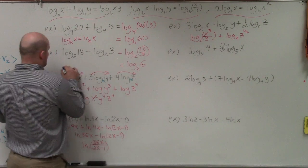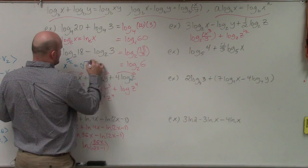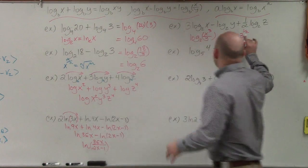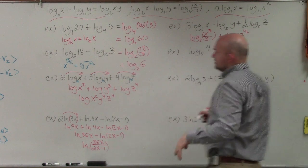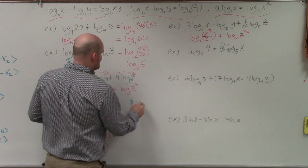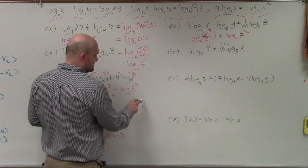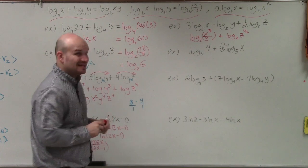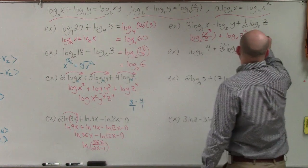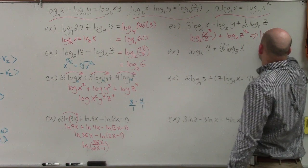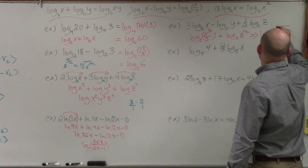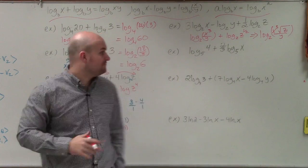Remember: if you have x to the m over n, that's equal to the nth root of x to the m. When multiplying the fraction, that 9 — or rather the terms in the numerator — get multiplied together. The final simplified condensed form is log base 2 of x cubed times the square root of z, all divided by y.